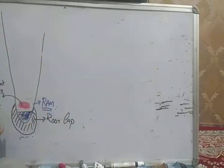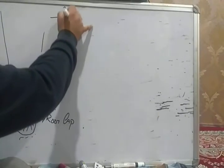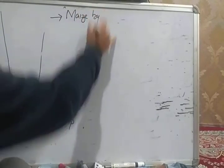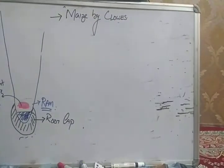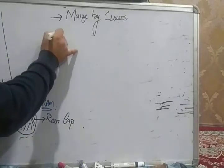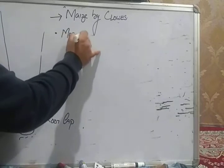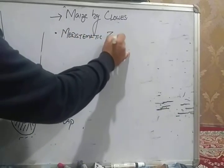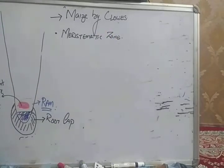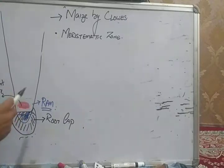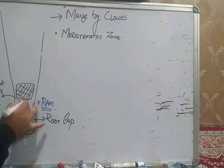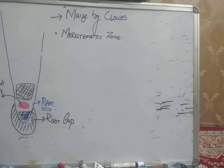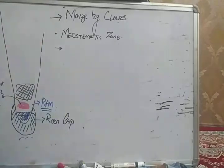Quiescent center was first discovered in maize. Now, as far as the second region is concerned, the second zone is called the meristematic zone. Meristematic zone kya hai - there is a proper region behind the root cap whose actual function is to add new cells.